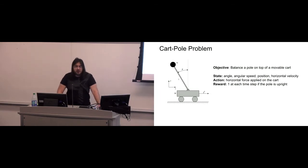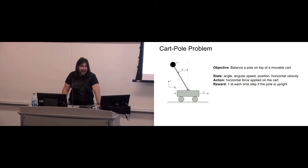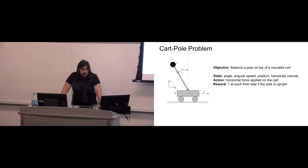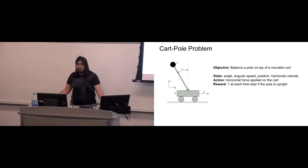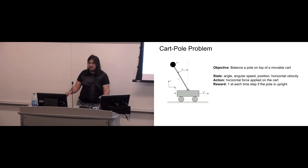Some examples of RL problems. A very basic one is the cart pole problem, where the objective is to balance a pole on top of a moveable cart. The state parameters include the angle of the pole, angular speed, position, and horizontal velocity. The available action is the horizontal force applied on the cart. The reward is plus one at each time step if the pole is upright.